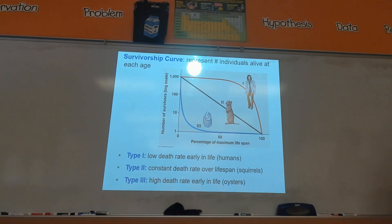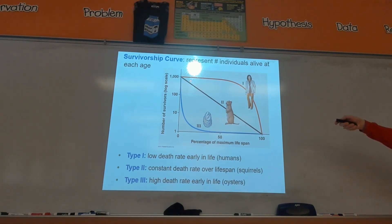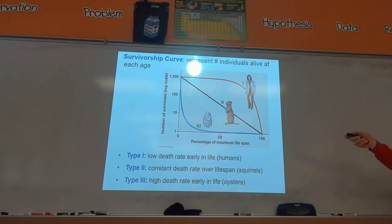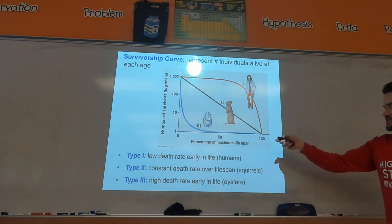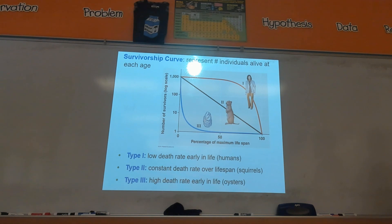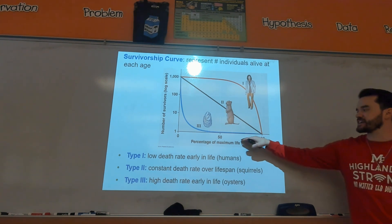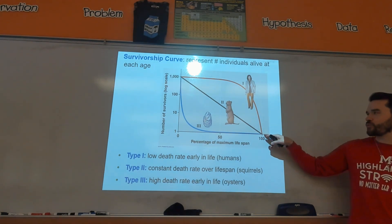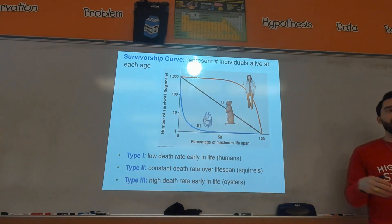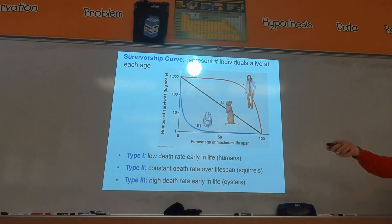Make sure you know the three types of survivorship curves and be able to identify their graphs. Type one is what humans have — a low death rate early in life, and then a steep drop-off as you get older, around the seventies or eighties. A lot of humans survive to about 90% of their lifespan. Compare that to type three, like oysters, which have a really high death rate early in life — very few oysters make it to their maximum possible lifespan. The X-axis represents the maximum possible lifespan for each respective species. Squirrels are type two — kind of a linear line.